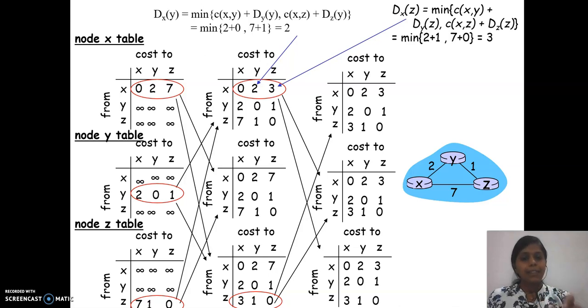Later on, what happens? After a given time slice, routers exchange the information. X is sharing its table with y and z. Y is sharing its table with x and z. When the neighbor node information is shared, then the distance vector gets updated. In this case, consider when x receives information from y and z, this value is updated.